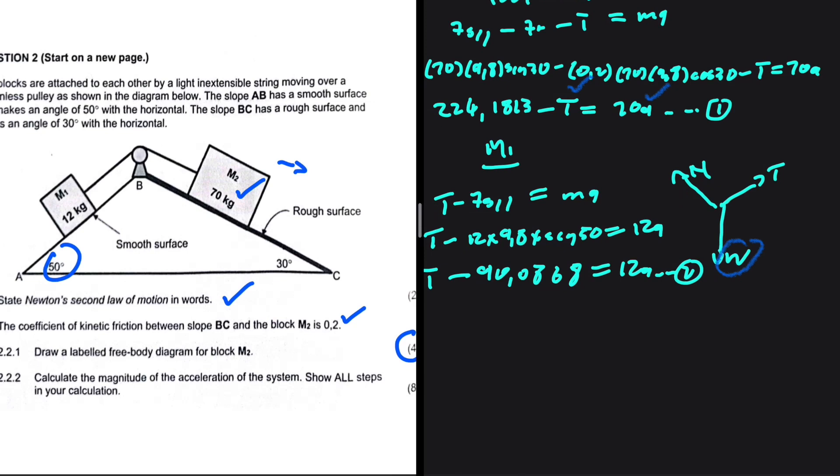Let's add the two equations. We're going to add the left hand side together and the right hand side together. Minus tension and plus tension will cancel out. We're going to be left with 224.1813 minus 90.0868 being equals to 82a. This is just 134.0945 being equals to 82a.